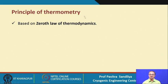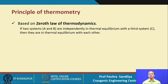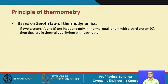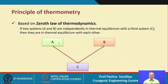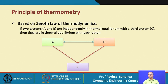This measurement principle is based on the zeroth law of thermodynamics, which says that if two systems A and B are independently in thermal equilibrium with a third system C, then A and B are also in thermal equilibrium with themselves. Thermal equilibrium means A and C have the same temperature, and B and C have the same temperature, so A and B are also at the same temperature.